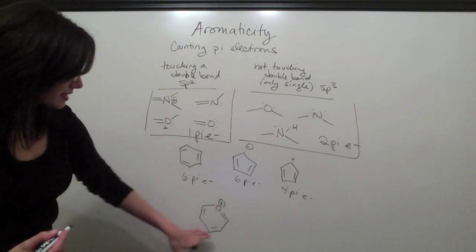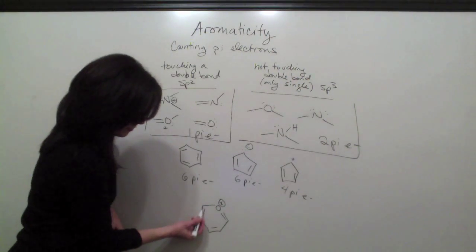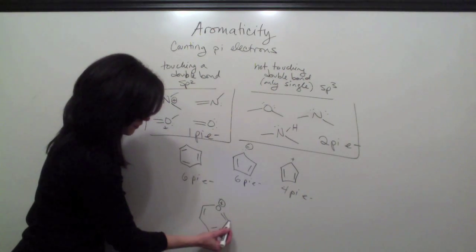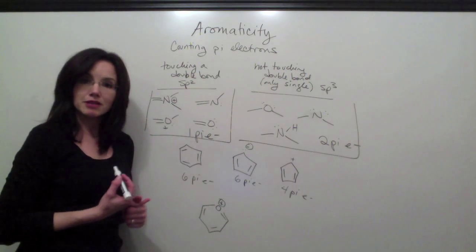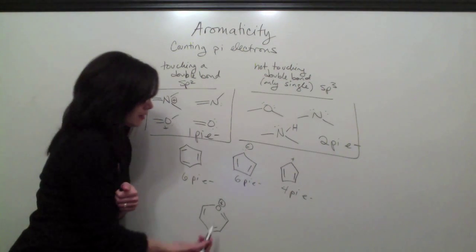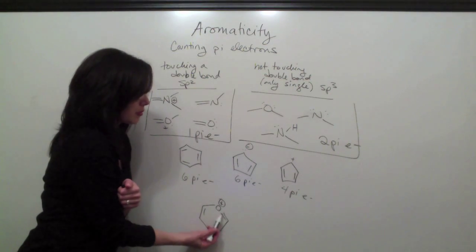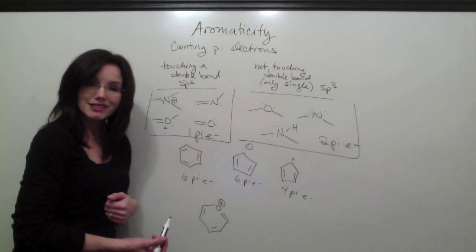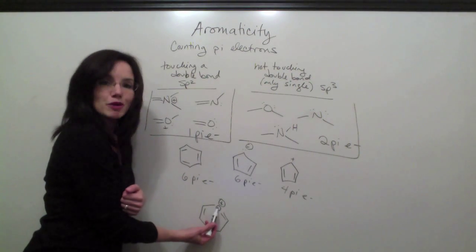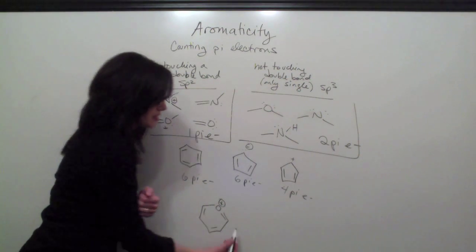So if we looked at this compound here, we have one, two, three, four, five sp2 carbons that would count as one pi electron each. And we have an oxygen that's touching a double bond, which means it's sp2 hybridized as well. So it counts as one pi electron. So there's a total of six.